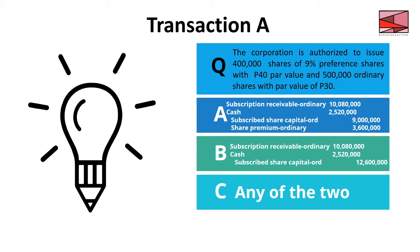Under memorandum entry for Transaction A, simply state: the corporation is authorized to issue preference shares amounting to 16,000,000 and ordinary shares amounting to 15,000,000 — total authorized shares of 31,000,000 pesos. The 9% in front of preference shares is the dividend rate — in future discussions you'll always see a percentage in front of preference shares. Sometimes there are two percentages because preference shares can have multiple classes.